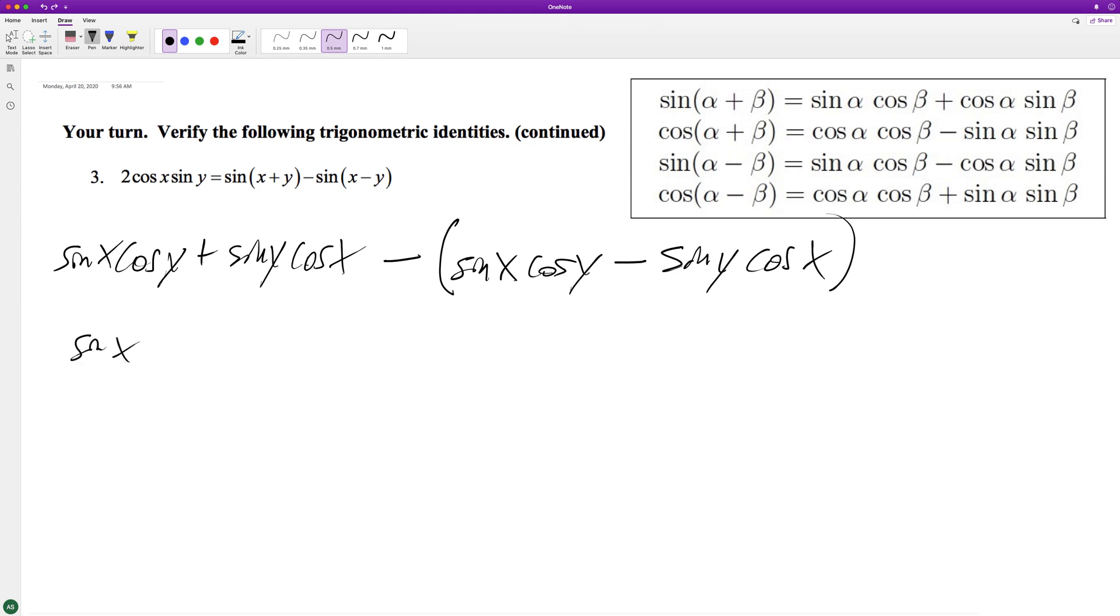so the same thing over here, except this minus becomes minus sine of x cosine of y, and this minus turns us into a plus sine of y cosine of x. This cancels this out and we have...